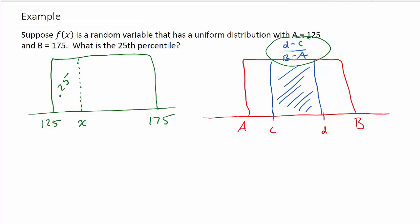So if we plug this in, that's going to give me X minus 125 over 175 minus 125. See, X is the D, 125 is the C. It just so happens in this one C and A are the same.